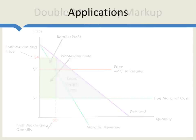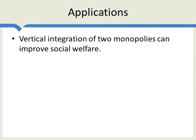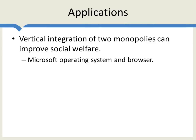Let's look at some applications. First, vertical integration of two monopolies can improve social welfare. Monopolies overall aren't great, but if you're going to have a monopoly, it's better to have one vertically integrated monopoly than two vertical monopolies. A classic example is Microsoft, which was accused of leveraging its monopoly in operating systems to get a monopoly in browsers. But consider: would you rather have Microsoft with a monopoly in operating systems and Netscape with a monopoly in browsers, or Microsoft with a monopoly in both? It's actually better for consumers for Microsoft to have a monopoly in both, because you get lower prices and increased output — and from Microsoft's point of view, higher profits as well.